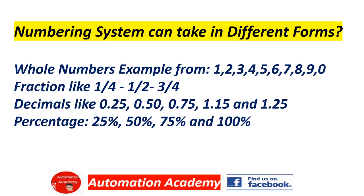Numbering systems can take different forms: whole numbers, for example 1, 2, 3, 4, 5, 6, 7, 8, 9, 0; fractions like 1/4, 1/2, and 3/4; decimals like 0.25, 0.50, 0.75, 1.15, and 1.25; and percentages such as 25%, 50%, 75%, and 100%.